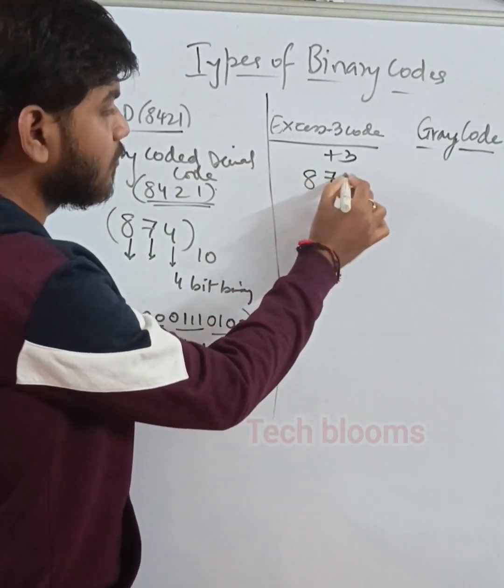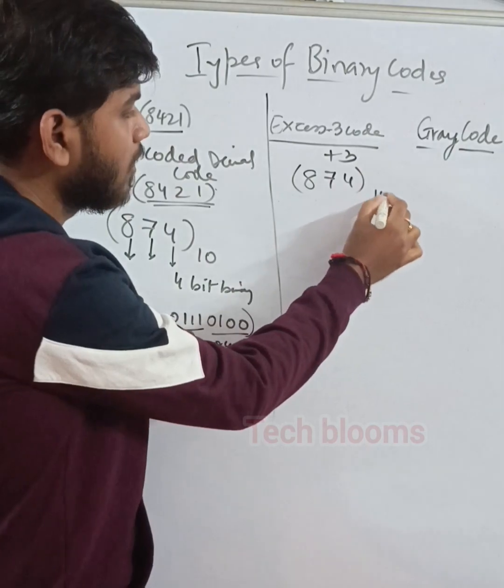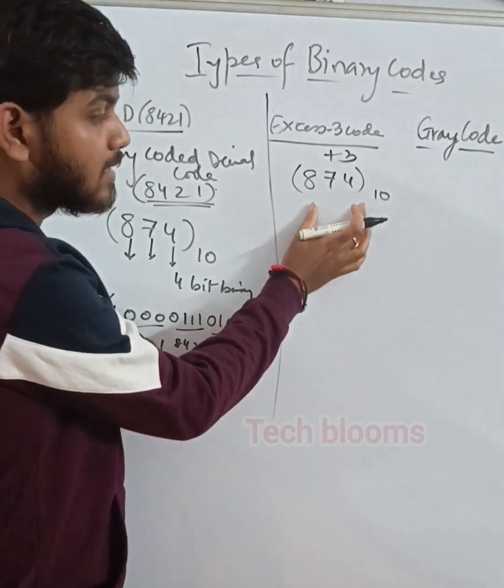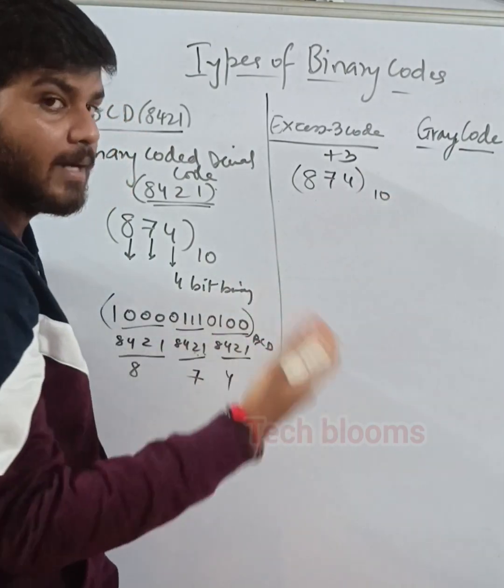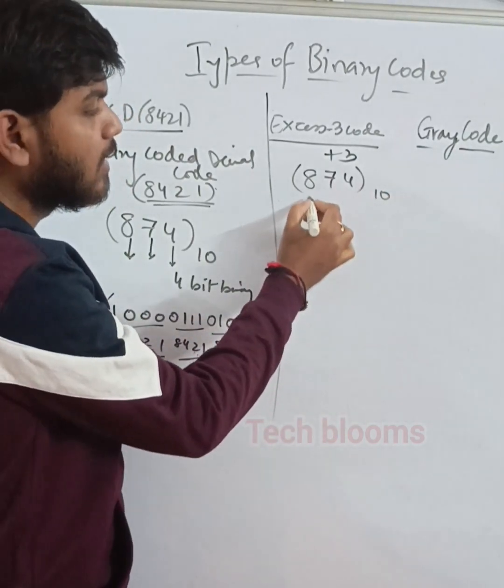For example, you have 8, 7, 4 decimal. Now to this decimal you need to add plus 3. How will you add plus 3?